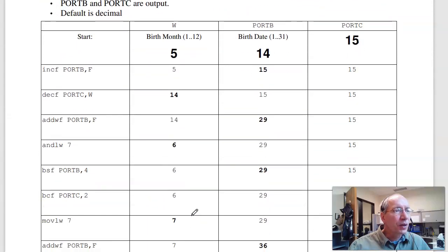Problem three. What's the result after each instruction? So if I start at 5, 14, 15, when I increment B, put the result in B, 14 goes to 15. Decrement port C, put the result in W, 15 minus 1 is 14. Add port B to W, put the result in port B. 14 plus 15 is 29. Put the answer in port B.